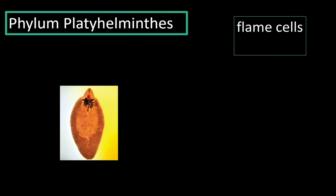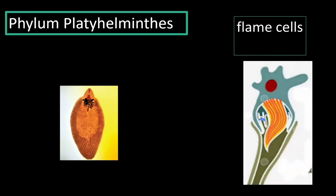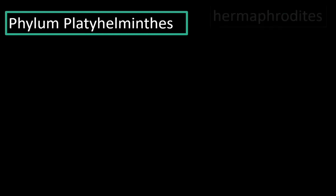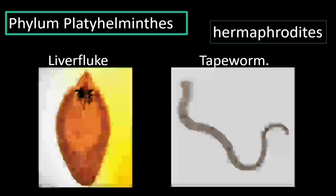Flatworms have flame cells — special cells that remove waste material from the body. This process of removing waste materials is called excretion; in our body, kidneys perform excretion, while in Platyhelminthes, excretion is done by flame cells. These organisms are hermaphrodites — they have both male and female organs in the same animal. Liver fluke and tapeworm are the common examples for the phylum Platyhelminthes.